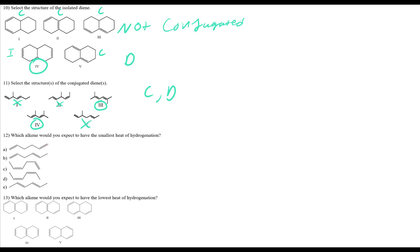Question 12: which alkene has the smallest heat of hydrogenation? Small heat equals most stable. More stable compounds release less heat. Conjugation increases stability. A, B, and C are all isolated — not conjugated.